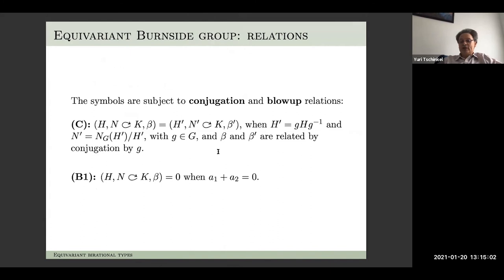The sequence beta of characters determines a faithful representation of H of dimension n minus d. Then there are some relations. The first two are conjugation actions on everything inside — acting by conjugation on subgroups of G and on the representations beta, and on the algebra. There is also a simple relation that if a_1 plus a_2 is zero, that symbol is zero.